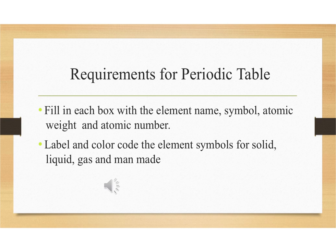First, we want you to fill out each box with the element name, symbol, atomic weight, and atomic number. The blank periodic table I'm giving you does have the names of the various elements already included in each box. We're also going to label and color code the elements so that we can recognize what is a solid, what is a liquid, what is a gas, and what is man-made.